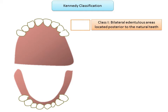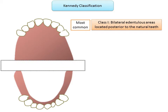According to Stratton, the incidence of Class 1 partially dentate arch in the maxilla is about 20 percent and in the mandible about 50 percent. Class 1 is the most common type of partially edentulous arch seen in clinical practice.